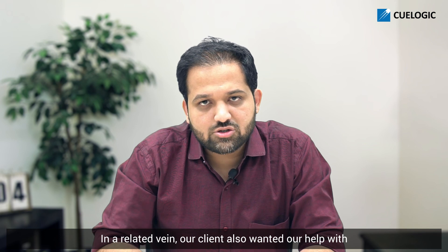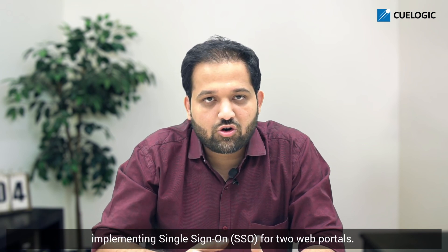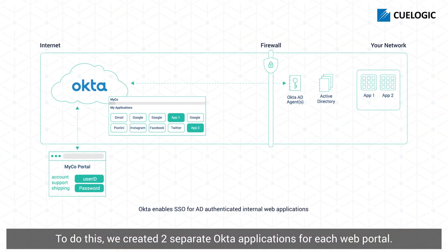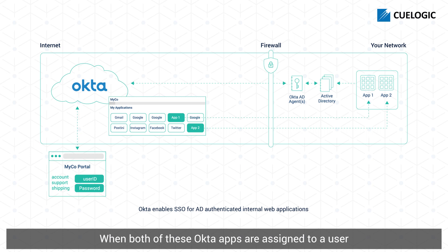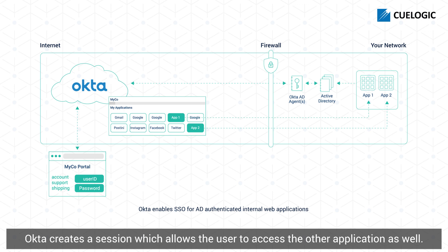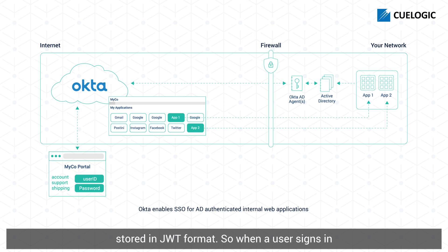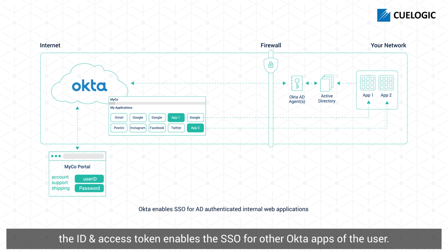Our client also wanted help with implementing SSO for two web portals. To do this, we created two separate Okta applications for each web portal. When both of these Okta apps are assigned to a user and they log into one of them on a browser, Okta creates a session which allows the user to access the other application as well. Okta uses ID and access tokens for session management. These tokens have authorization and some additional user information stored in JWT format. So when a user signs in — either to Okta or to any Okta app assigned to them — the ID and access token enables SSO for the other Okta apps of the user.